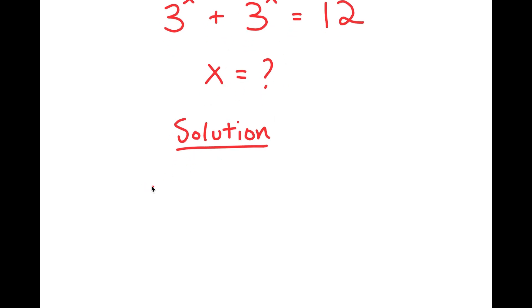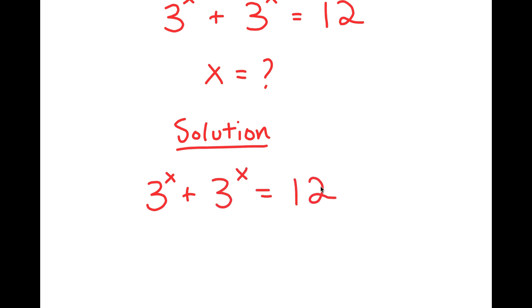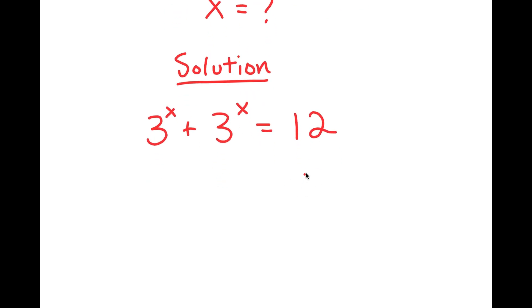Let me first rewrite my equation down here so I have a little more solving space. My equation is 3 to the power of x plus 3 to the power of x is equal to 12. The first thing I'm going to do is factor out 3 to the power of x from my left-hand side.